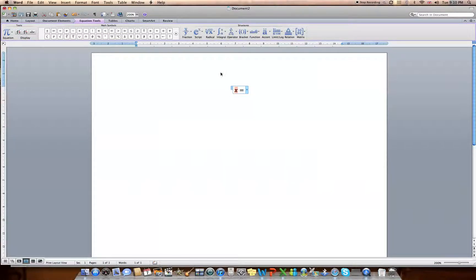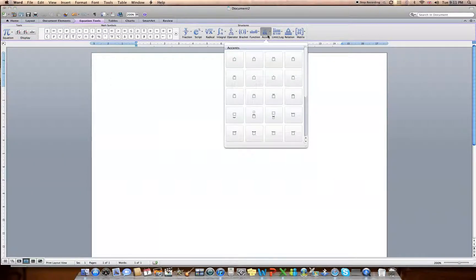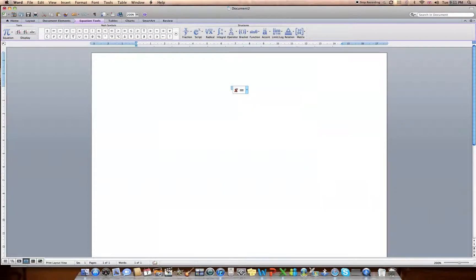So let's just highlight the x. And I can come up to one of these menus at the top. And the one that says Accent puts anything on top. I'm going to select the mean notation, the bar. And there we go. We've now got x bar, which represents the mean. In order to do a mean, we know that we have to add all the numbers and then divide by the number of numbers.